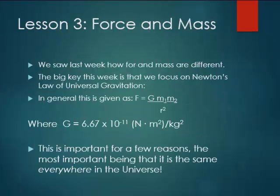So at this point I want to review force and mass and how they are a little bit different. Remember, we saw that mass is the amount of matter in the object and weight is the gravitational pull on the object. The big key this week is that we focus on Newton's law of universal gravitation, again, that we saw last week. The general form of this equation is f equals g m1 m2 over r squared, where g is the gravitational constant we see below.